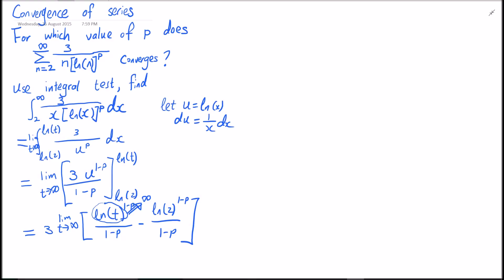The interesting bit is log of t because that goes towards infinity. Therefore, when we take log of t to the 1 minus p, that only converges if 1 minus p is less than 0. Therefore, p needs to be bigger than 1 for the series to converge.